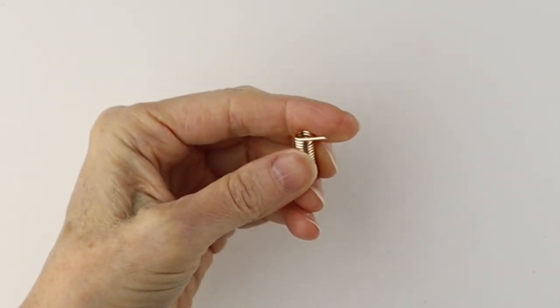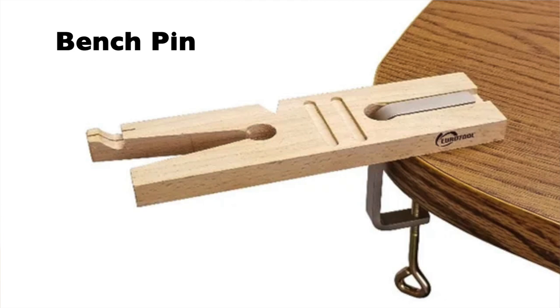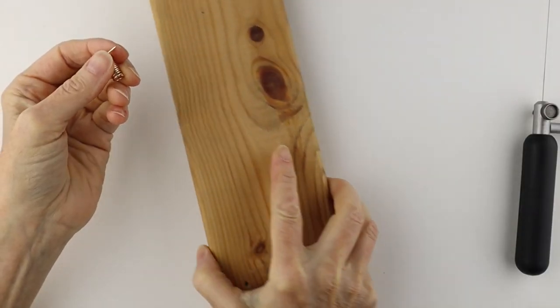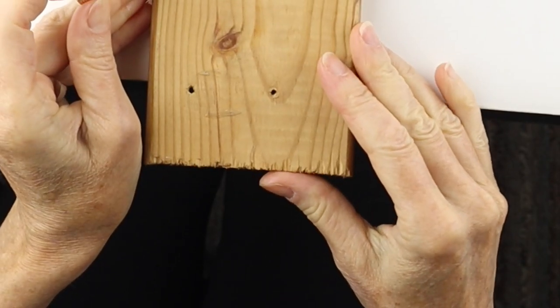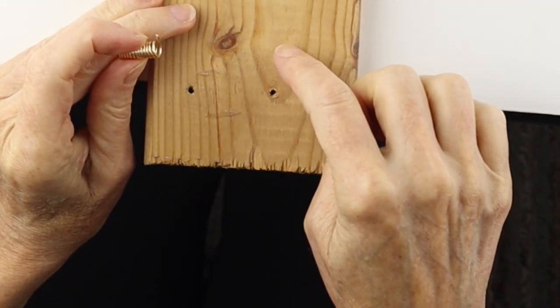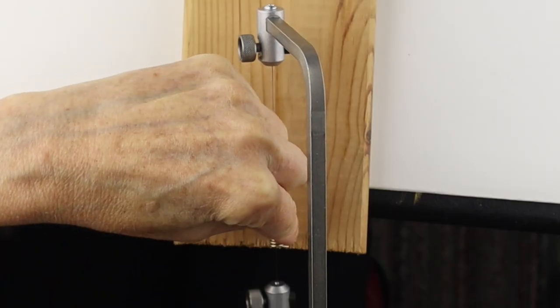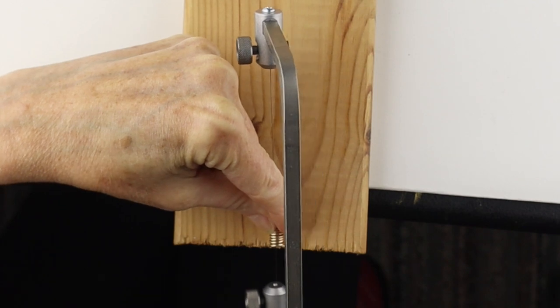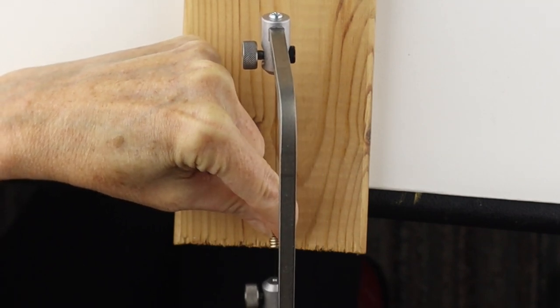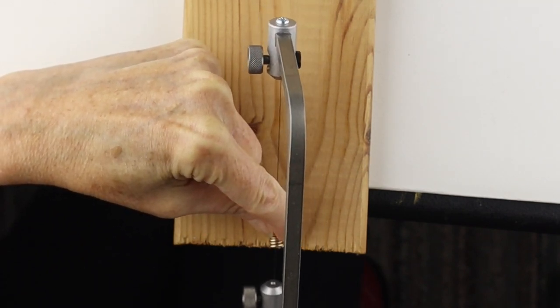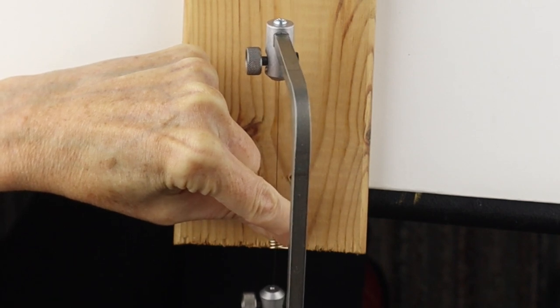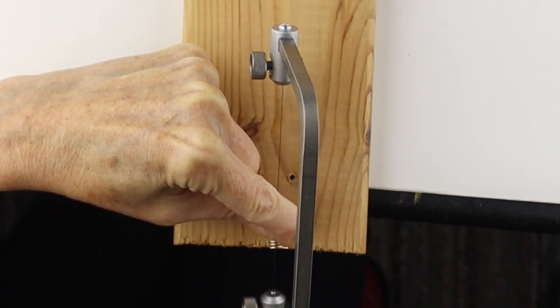There is a special tool you can buy to hold this in place. I just have a piece of wood. Bring it to the edge of the table, clamp this down. If you have a clamp, hold the spring tightly in place, and you're going to start your sawing. So just gently saw it like that.